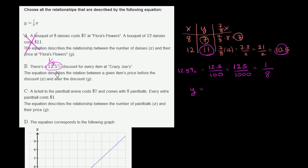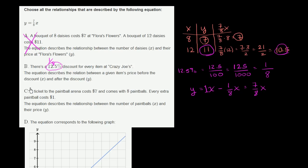So there is a 1 eighth discount for every item at Crazy Joe's. The price after the discount equals the price before the discount minus 1 eighth of the original price. So that's x minus 1 eighth x, or 1x minus 1 eighth x, which equals 7 eighths x. This relationship is exactly the same as y equals 7 eighths x — the price after discount is 7 eighths of the original price. We can feel good about this one.